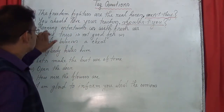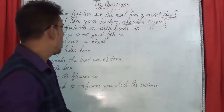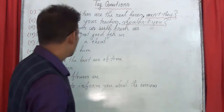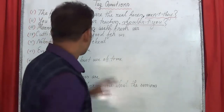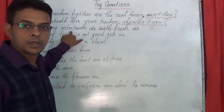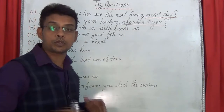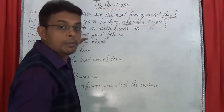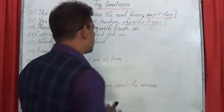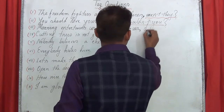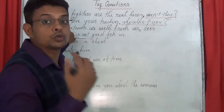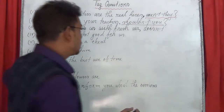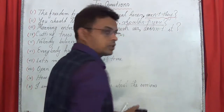The third statement: 'Morning entertains us with fresh air.' You can see there is no auxiliary here, so you have to think about the main verb — 'entertains.' If you see the main verb in present form, that means present indefinite tense. You have to use the auxiliary 'do' or 'does.' Since the subject 'morning' is singular, you use 'does.' The sentence is affirmative, so use the negative form — 'doesn't.' The pronoun for 'morning' is 'it.' So the tag is: 'doesn't it?'